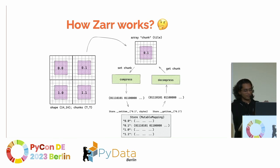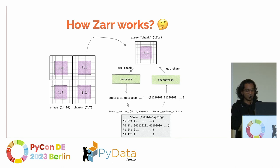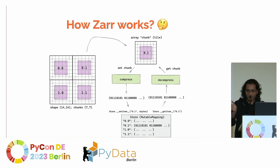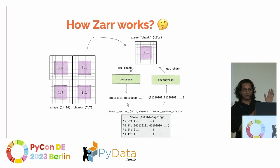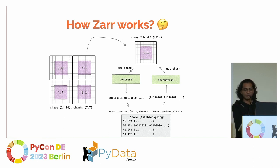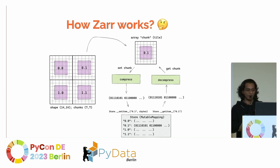Here's a simple illustration of how chunking and decompression work. You have an N-dimensional big array divided into four chunks. Each chunk is assigned a key using a mutable mapping fashion in Python, and every chunk is compressed using the NumCodex library. If you want to work with any chunk, you enter the key and that chunk is retrieved — not the whole data. If you're working with 100 GB of data and only want the last chunk, you don't need to load the whole dataset.